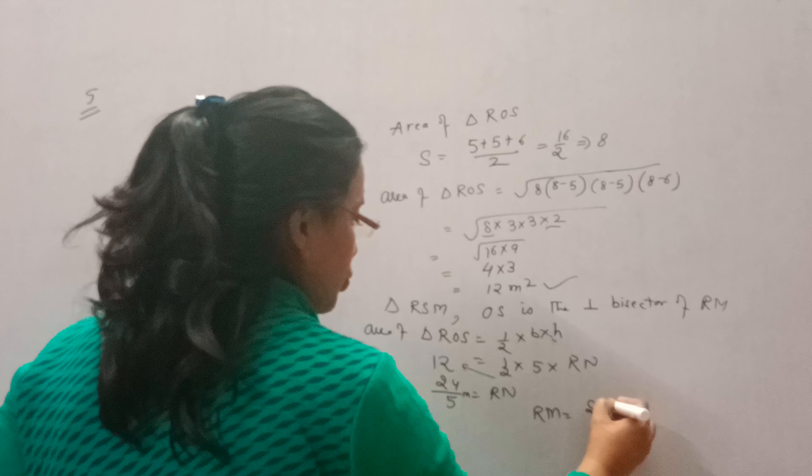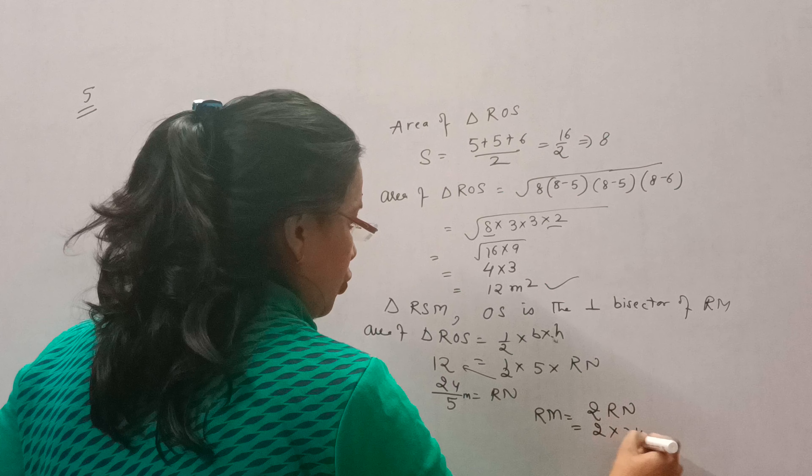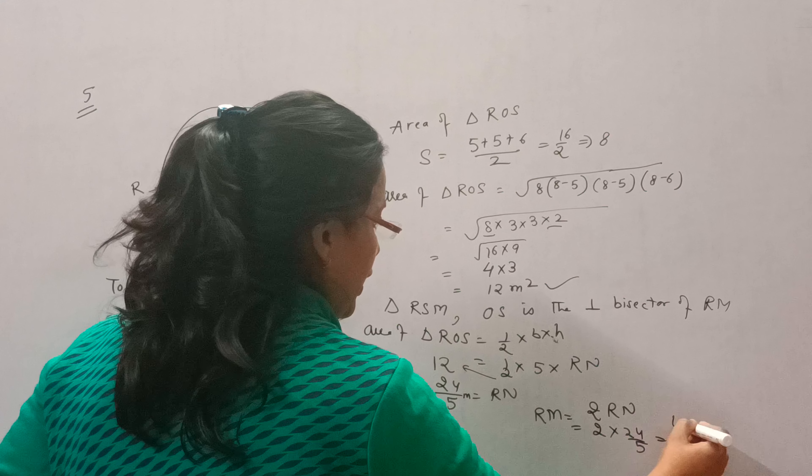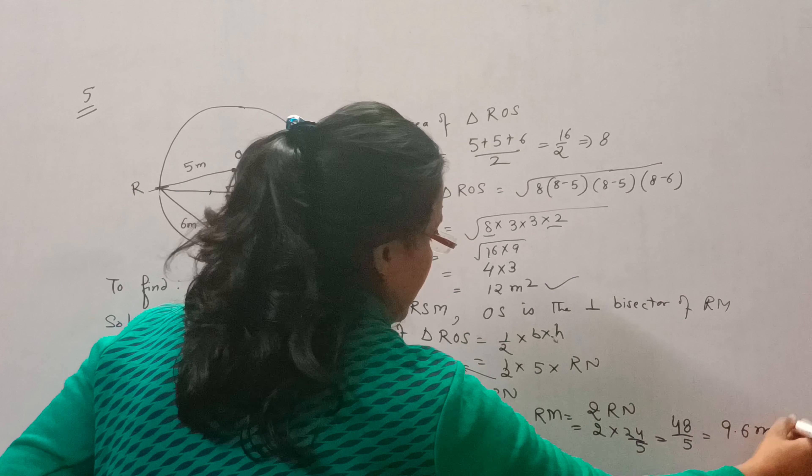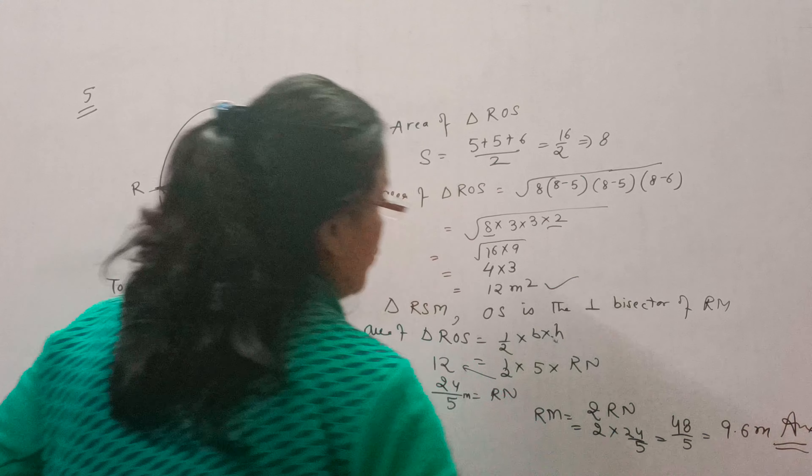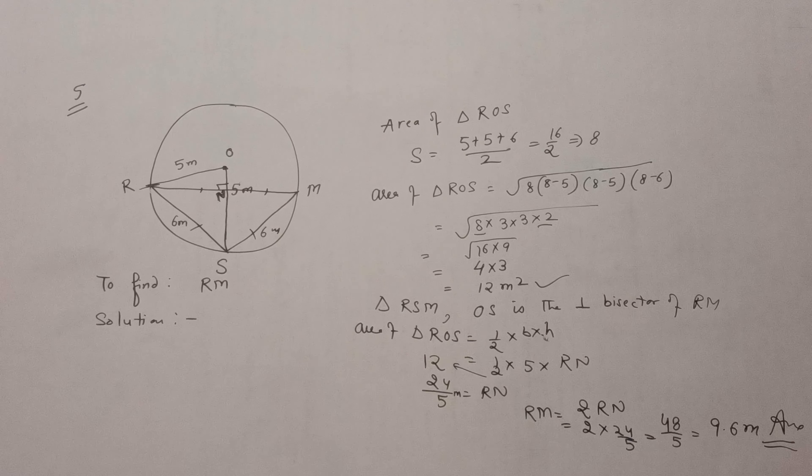RN equals NM. So we can write RM as 2 times RN. That is 2 times 24 by 5, 48 by 5, which is 9.6 meters. The distance between R and M is 9.6 meters.